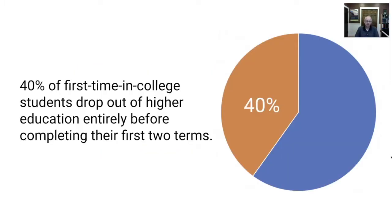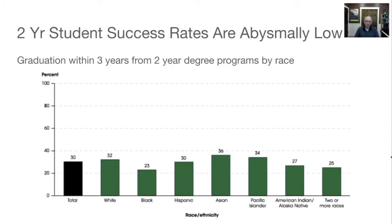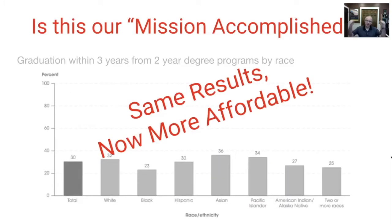So students whose faculty adopt OER save a ton of money and have the same learning outcomes. Mission accomplished? I'm going to say no. 40% of first-time college students drop out of higher ed completely before they finish their first two terms. Graduation within six years from four-year degree programs is only about 60% overall, and far lower depending on racial breakout. Graduation within three years from a two-year degree program is only 30% overall. These rates are bad, and I don't think our work with OER can culminate in saying 'same results, but we made it more affordable.' There's more work for us to do here.